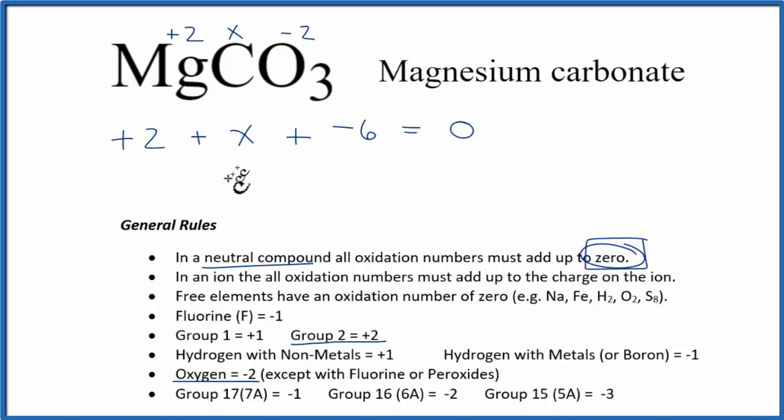So we have x - 4 = 0. So x has to equal +4.